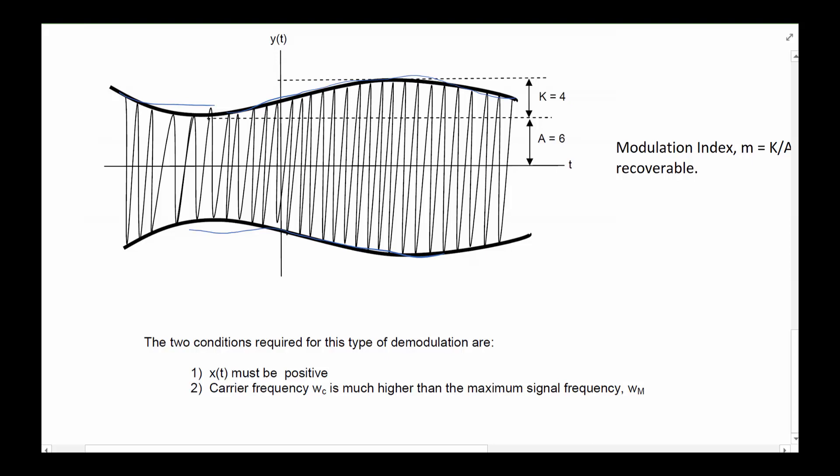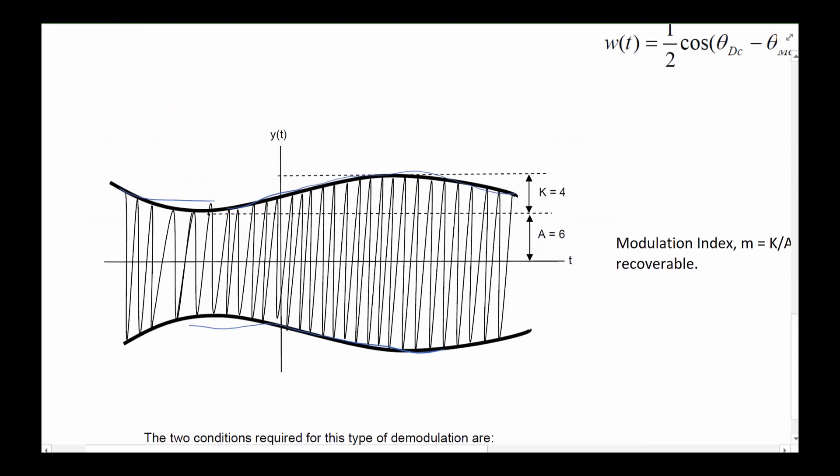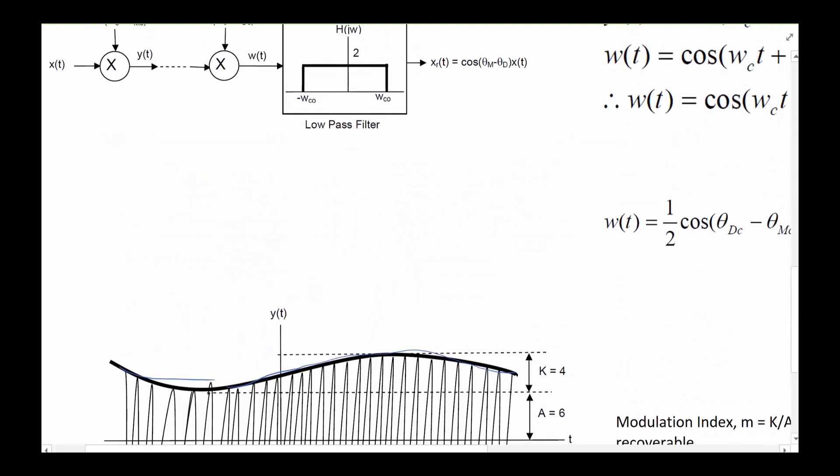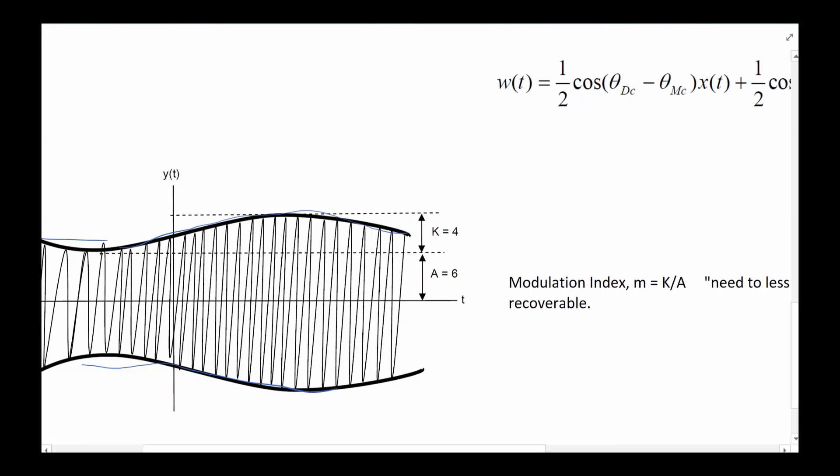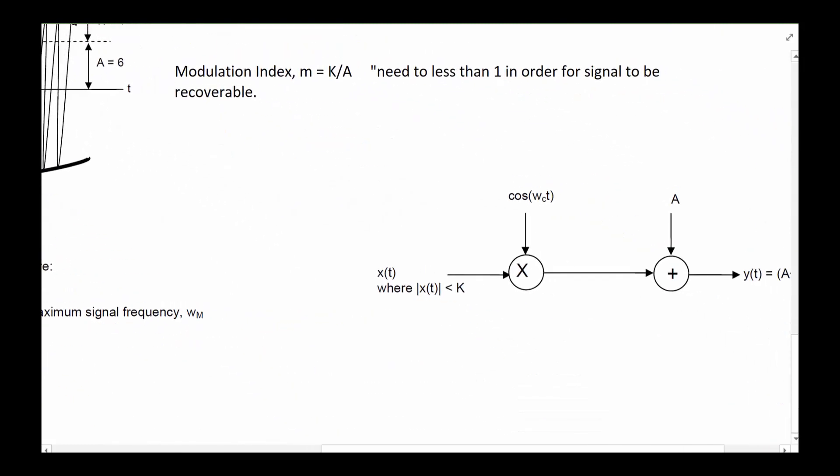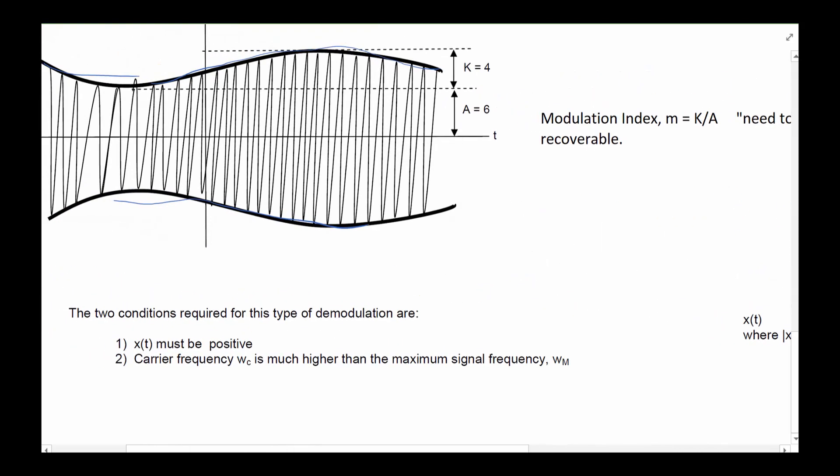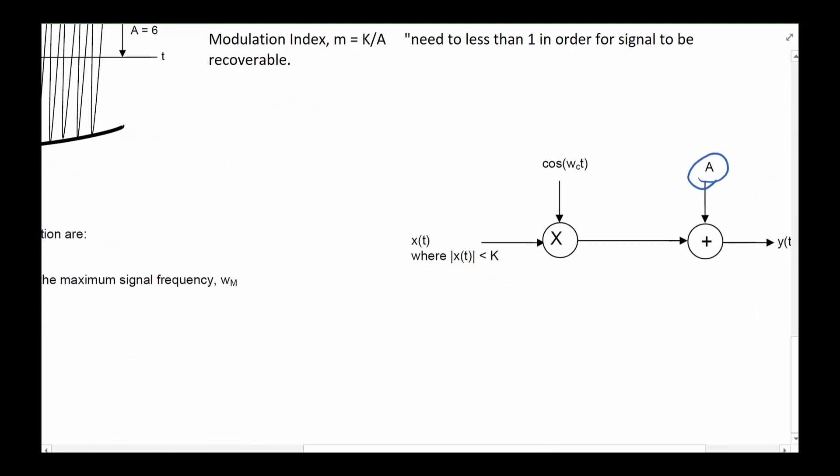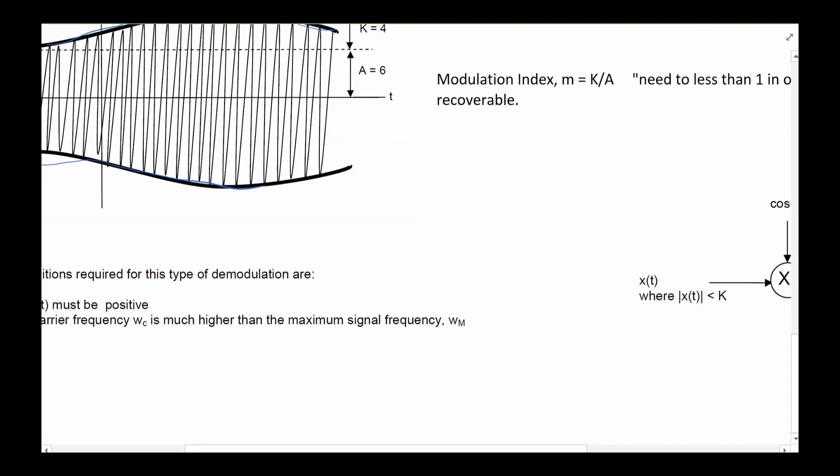And make sure the carrier frequency of course is much higher because we want to, when we filter it, we would like to be able to get rid of the high frequency stuff and only keep the low frequency stuff. Now what happens if that is not true? All you have to do basically is add a constant to it. If x is over zero and one, we just push the x up before we transmit, when we modulate it before we transmit it. So we push it up to make sure that x(t) is positive.